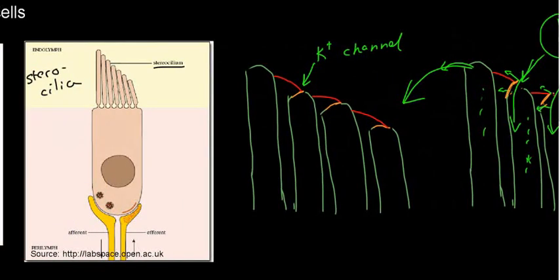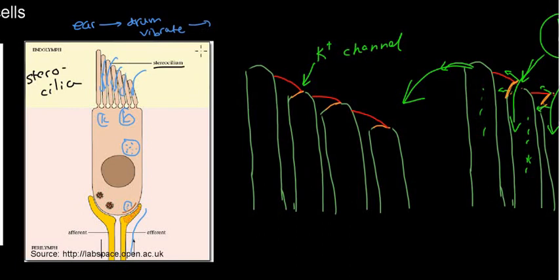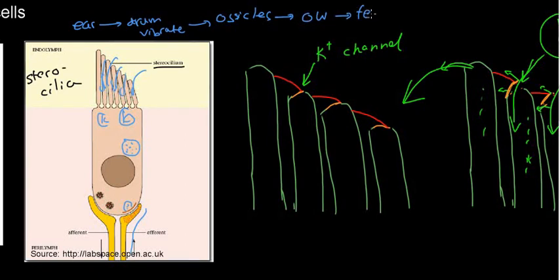Potassium flows in via the stereocilia, and there are some vesicles containing excitatory neurotransmitters that are going to be released and read by the nerve. To summarize the chain: vibrations enter the ear, the eardrum vibrates, the ossicles vibrate, the oval window transmits the vibration to the cochlea, and then the organ of Corti's tectorial membrane vibrates.